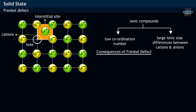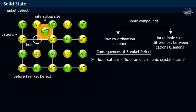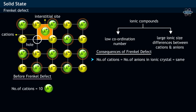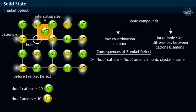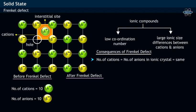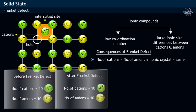Consequences of Frenkel defect: The number of cations and anions in the ionic crystal remains the same before and after the Frenkel defect. Before Frenkel defect, the ionic crystal shown has 10 A+ cations and 10 B− anions. After Frenkel defect, due to dislocation of cation A+, the number of cations and anions remains the same, equal to 10.